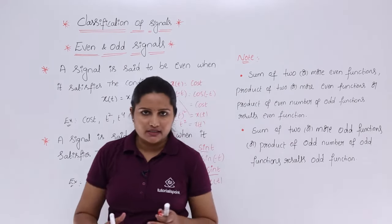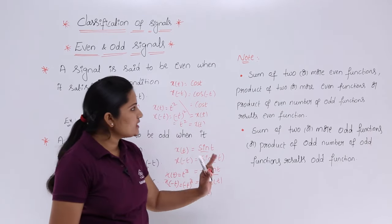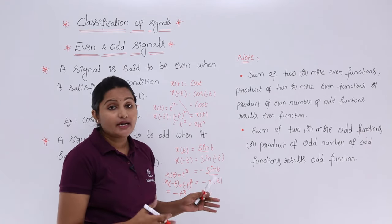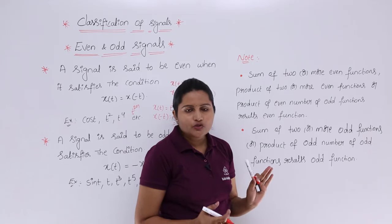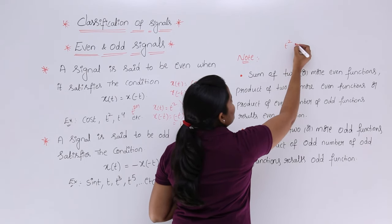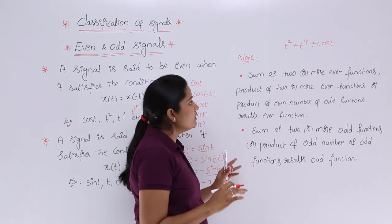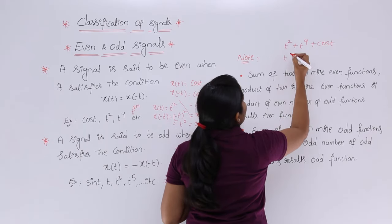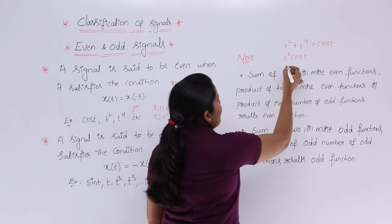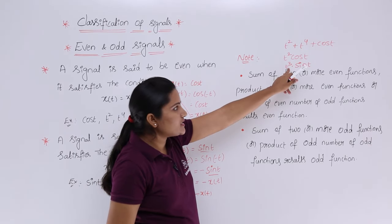Now coming to the combination of signals — how can we say whether a combination of signals results in an odd or even signal? Here are some very important note points, very important for GATE-like technical exams, which can be used as shortcuts. Sum of two or more even functions, or product of two or more even functions, or product of an even number of odd functions — these are the cases to consider.